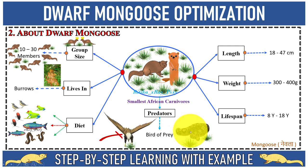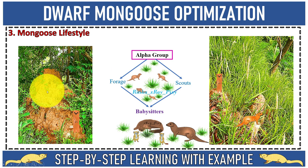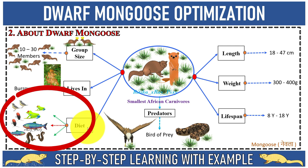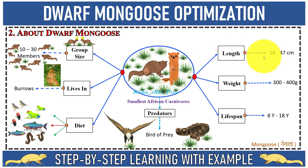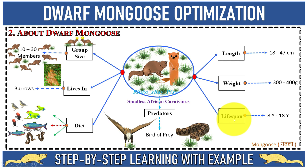Mongoose enemies include eagles, large snakes, and large mongoose species. They also use termite mounds for shelter and refuge from enemies. Mongoose diet includes small animals like frogs, birds, beetles, fish, snakes, crabs, spiders, grasshoppers, larvae, and others. Mongoose length is about 18 to 47 centimeters, weight 300 to 400 grams — though length and weight depend on species. Mongoose lifespan is 8 to 18 years, and up to 20 years in captivity.